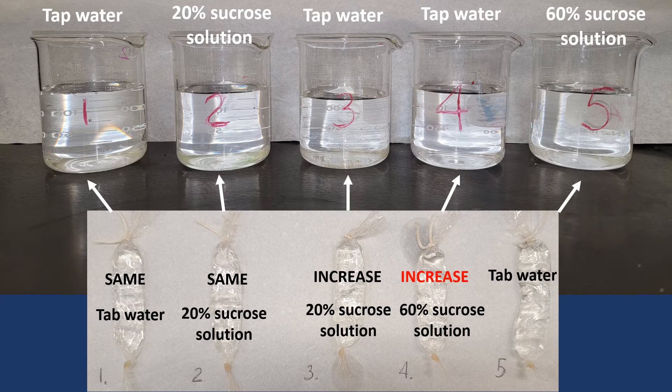If we submerge dialysis bag number five filled with tap water into beaker number five containing 60% sucrose solution, will the mass of the bag increase, decrease, or stay the same? Again, think. Is the solution in beaker four hypertonic, hypotonic, or isotonic? You are correct. It is hypertonic. Therefore, over time, the molecules of water will rush out of the bag into the beaker. This will cause a decrease in bag mass.